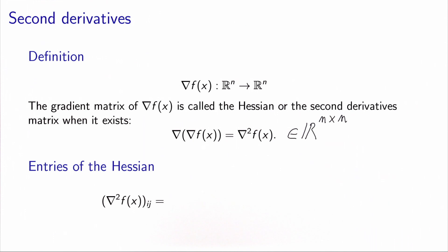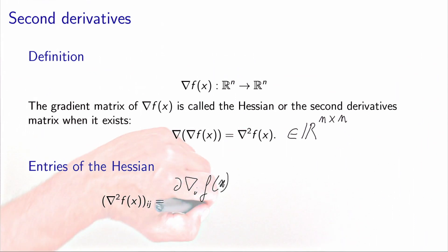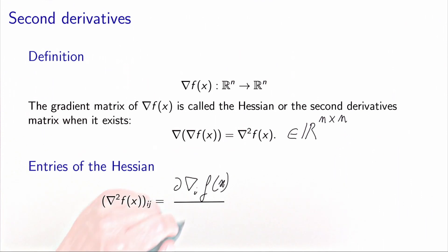It is n by n: n because of the n variables, and n because of the n entries of the gradient. The entry at row i and column j of this Hessian matrix — if we take the definition of the gradient matrix that we saw previously — is the partial derivative of entry number i of the gradient with respect to variable j.